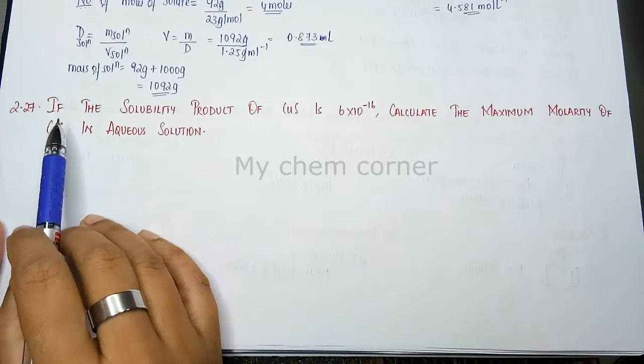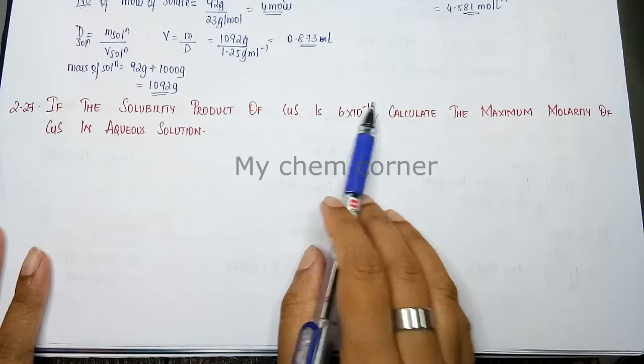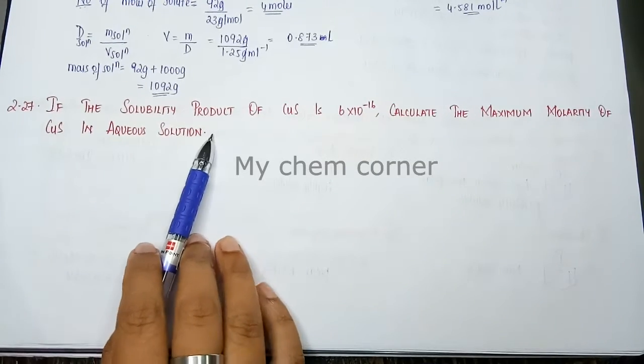Next is question number 2.27. If the solubility product of CUS is 6 into 10 to the power minus 16, calculate the maximum molarity of CUS in aqueous solution.